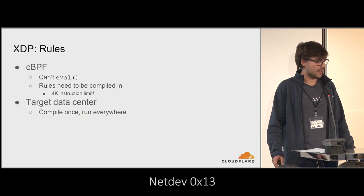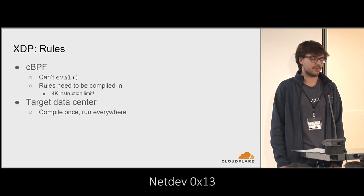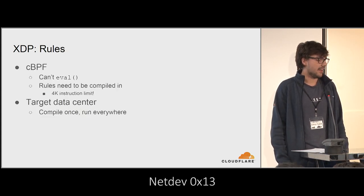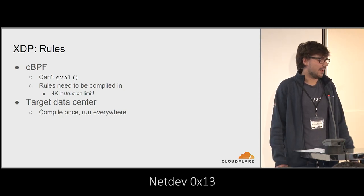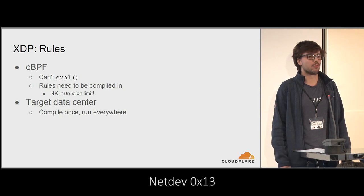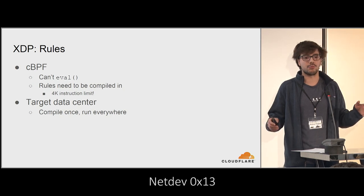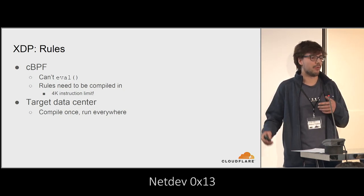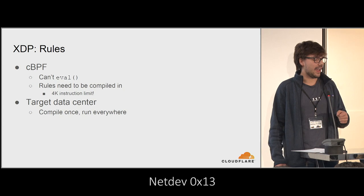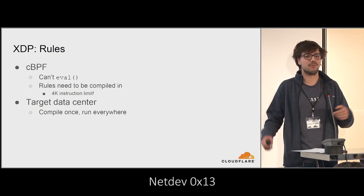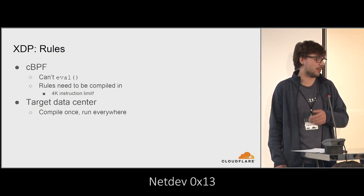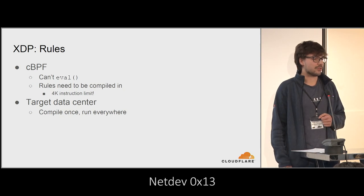How do we drop things? Our rules have two main parts: the classic BPF filter — and that's a challenge. We can't eval CBPF in eBPF; there are no magic helpers for it. This means we need to compile our rules in. You might imagine one generic eBPF program with rules stored in a map, but with CBPF this doesn't work. Since we have to build our rules in, the complexity limits become a challenge: the more rules we have, the more complex the program, the closer we get to the kernel's complexity limits. Compiling eBPF is also fiddly — we really don't want to be running Clang on thousands of edge servers.